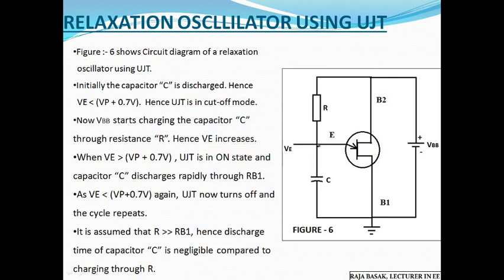The emitter is at its initial state. At time t = 0, the capacitor voltage Vc is equal to 0 — it is initially a discharged capacitor. The voltage across the capacitor is 0V, so the emitter voltage is also 0V.